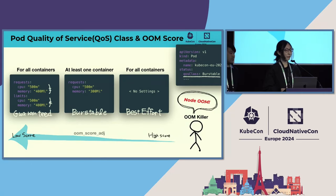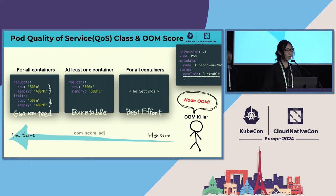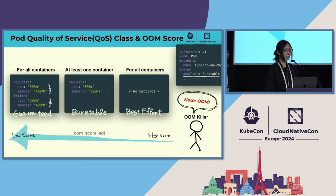Now let's consider resources at the entire node level. If a node runs out of memory, the OOM killer kills the process with the highest OOM score. Kubelet adjusts the score based on the pod's Quality of Service class. As you can see from the manifest in the upper right corner, you can find the QoS class in the status field.